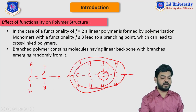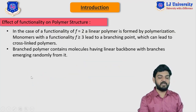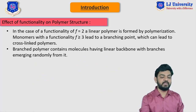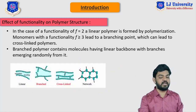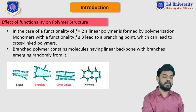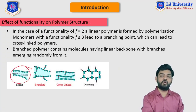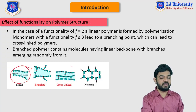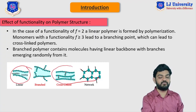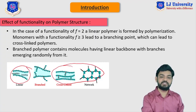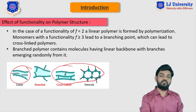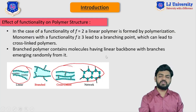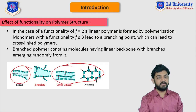As you can see on the screen, the linear polymer has a functionality of 2, while cross-linked or network polymers have functionality equal to 3 or greater than 3. This is the effect of functionality on the polymer.